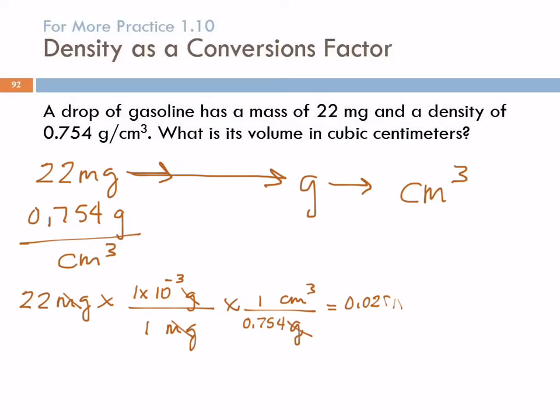So I've got 22 times 1 times 10^-3 divided by 0.754. 0.02917. And the unit, cubic centimeters.